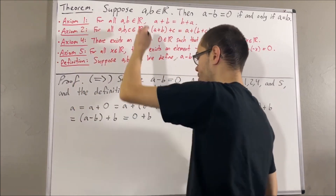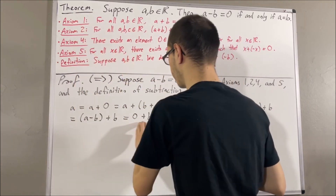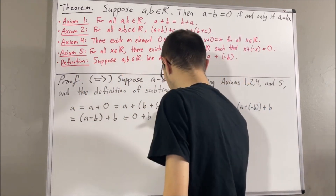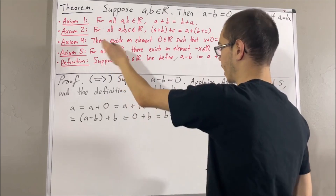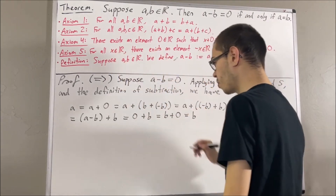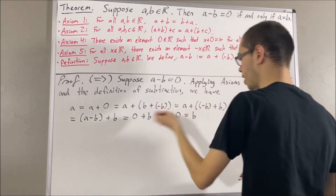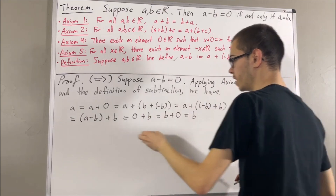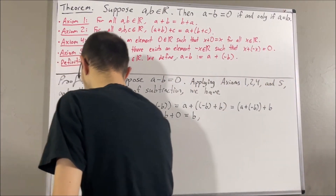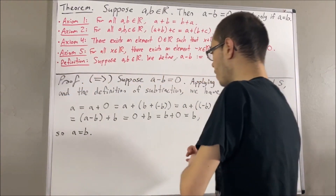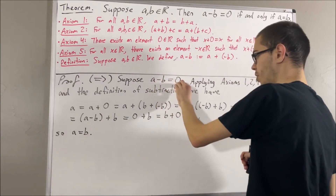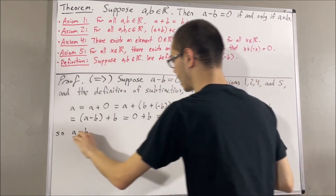And then by axiom 1, zero plus b is equal to b plus zero. And then by axiom 4, b plus zero is equal to b. So through this chain of equalities, we see that a is equal to b. So we have shown: if a minus b is equal to zero, then a is equal to b.